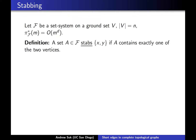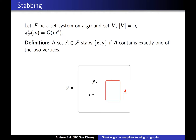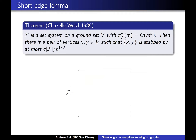Suppose we have this set system with a nice dual shatter function. There's this important notion called stabbing: we say a set A stabs a pair of vertices if it contains exactly one of the two vertices. So the pair (x, y) is stabbed by A if A contains y but not x. If A contains neither, it doesn't stab the pair; if A contains both, it also doesn't stab the pair.